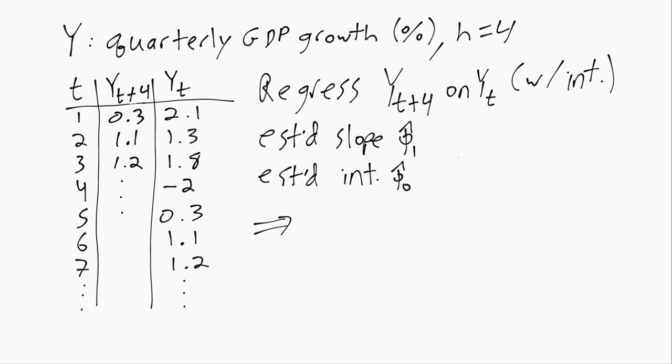And then using that we can finally generate our out of sample four step ahead forecast or y hat. This is now capital T, the end of our data set, plus four quarters beyond the end of our data set. We'll just plug in our estimated intercept and our estimated slope along with that very last number in our data set and that gives us our four step ahead forecast of quarterly GDP growth.